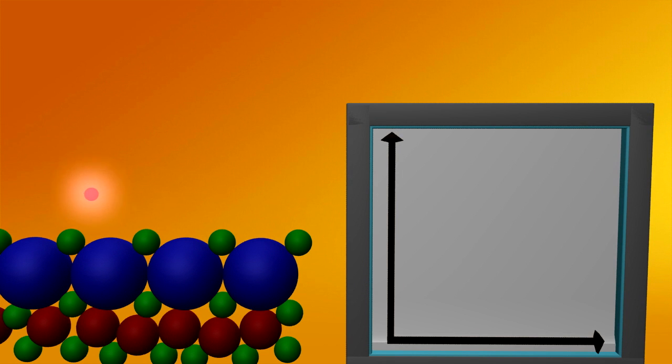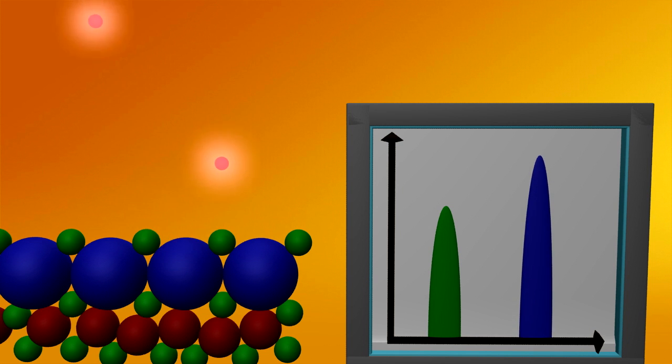For example, if this sample surface consists of two types of atoms, then the green lighter atoms create a low-energy peak in the spectrum, and the heavier blue atoms create a high-energy peak. The red atoms are not present in the first atomic layer of this sample, and therefore they also do not contribute a peak in the spectrum.